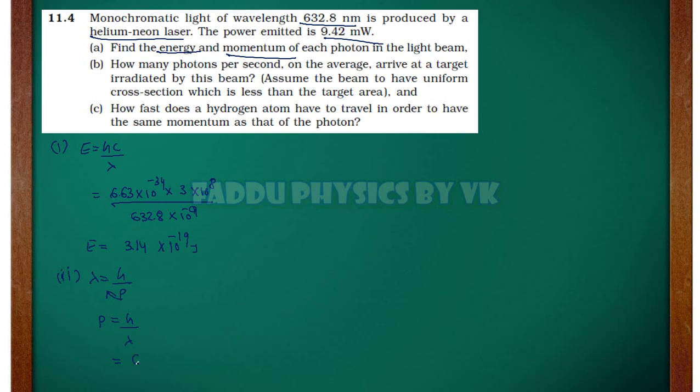H is 6.63 into 10 to the power minus 34 and lambda is given as 632.8 into 10 to the power minus 9. 1.05 into 10 to the power minus 27 kg into meter per second. This will be your answer.